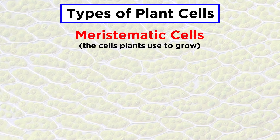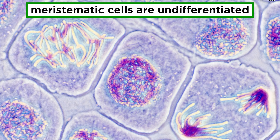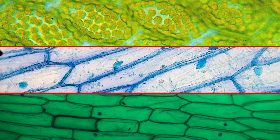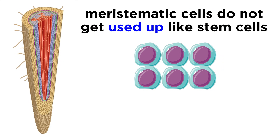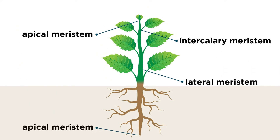First there are the cells that plants use to grow. These are called meristematic cells, and they're very much like the stem cells we have in our own bodies. What this means is that meristematic cells are undifferentiated, or without a specific job assigned to them when they are first created through mitosis. So when meristematic cells divide and replicate, they can produce daughter cells belonging to any other kind of plant cell. The important difference between meristematic cells in plants and stem cells in animals is that meristematic cells don't get used up, so they can continue dividing and helping the plant grow indefinitely. Meristematic cells can be found in the tips of the roots, which are the parts of a plant that grow down into the soil, and in the tips of the shoots, which are the parts of a plant that grow up into the air.